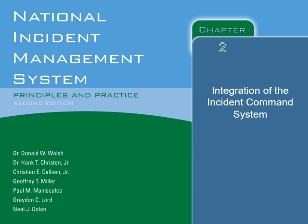Our objectives for this chapter: explain what the Incident Command System is and why it is effective; describe the five major functional areas of the Incident Command System; explain how the concept of Area Command helps to oversee the management of multiple incidences; identify the management characteristics of the Incident Command System; explain the importance of using common terminology; identify the common terminology used in an Incident Command System; and explain the similarities and differences between Area Command, Incident Command, and Unified Command.